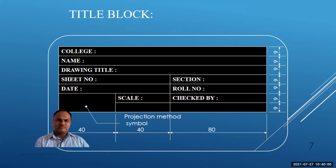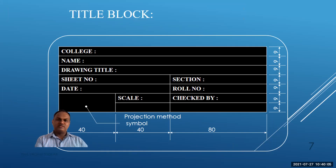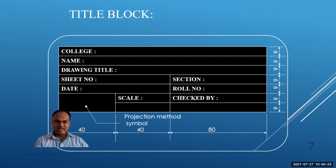Now we will see in detail how the title box is written. You write the college name — in the case of companies, the company name is printed there. Then you write your name, drawing title, sheet number, date, scale, section, roll number, and checked by. All boxes are 9 mm in dimension; the widths are 40 mm and 80 mm. This is the standard title box.